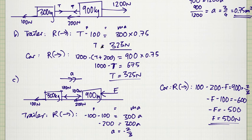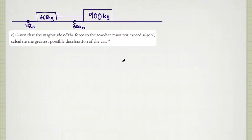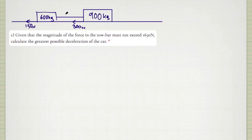Now for the part C from the exam question set on Google Classroom. We had a similar setup — a car and trailer with resistances to motion that stay the same when the car brakes. Given that the magnitude of the force in the tow bar must not exceed 1650 newtons, we need to calculate the greatest possible deceleration of the car. Looking at the trailer is simpler since there's an unknown acceleration and unknown F for the car.